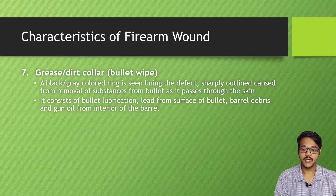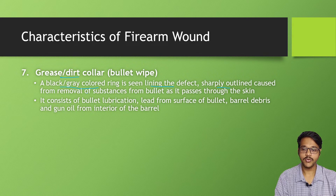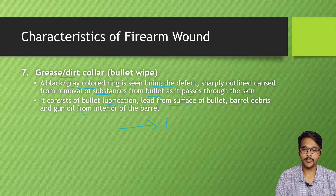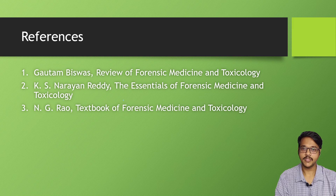Lastly, there is the grease collar or dirt collar. This is a black-gray ring seen lining the defect, caused by the removal of substances from the bullet as it passes through the skin. It mainly consists of bullet lubrication, lead from the surface of the bullet, ballistic debris, and gun oil from the interior of the barrel. As the bullet enters the skin, these substances are deposited around the rim of the entry wound, forming the grease or dirt collar.